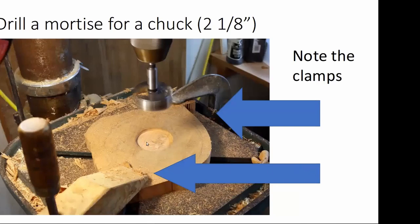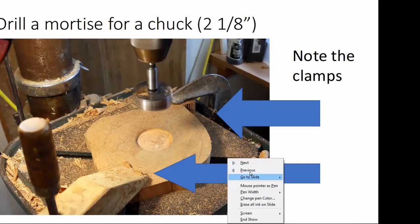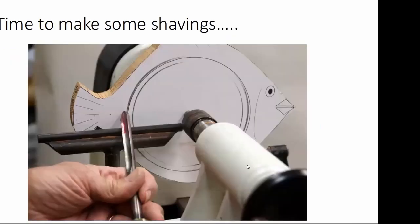With the drill press. The only thing about the drill press I would say is do not try to hold. We're drilling a 2-1/8-inch hole in the back as a mortise that we're going to put into the chuck in expansion mode. If you're doing this on a drill press with a Forstner bit, make sure you clamp that down because you cannot hold it if it grabs. Believe me.